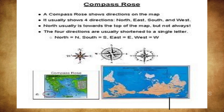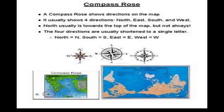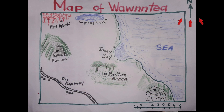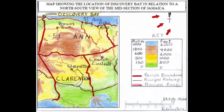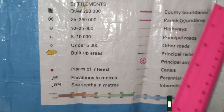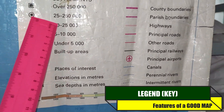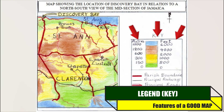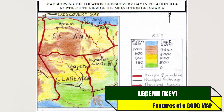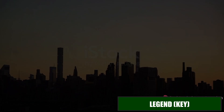Direction lets you know the compass direction of one place from another on the map. And finally, every map has a legend. The legend is also called a key because it unlocks the meaning of every symbol, word, and color used on the map.